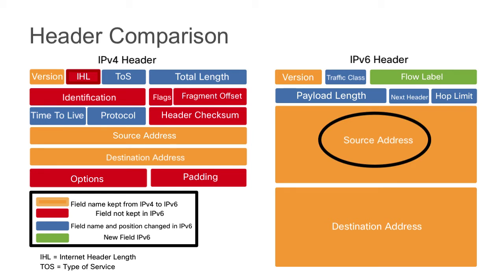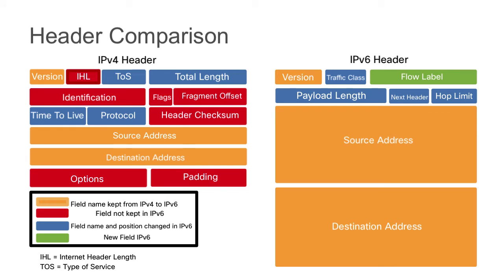We have our source and destination address fields. The difference is it's a much larger field in IPv6 — that's because it's a 128-bit address versus a 32-bit address. So we're going to have 256 bits of addressing in total: the source address is 128 bits and the destination address is 128 bits. We don't have any options or padding. There is also one brand new field in IPv6 called the flow label, which can be used to identify flows of traffic for quality of service implementations.